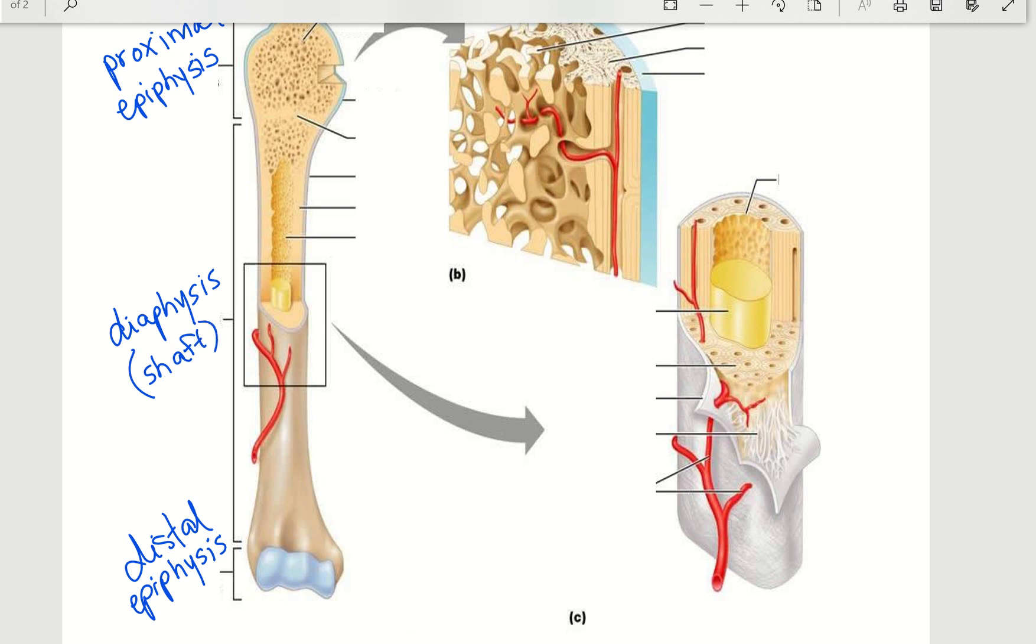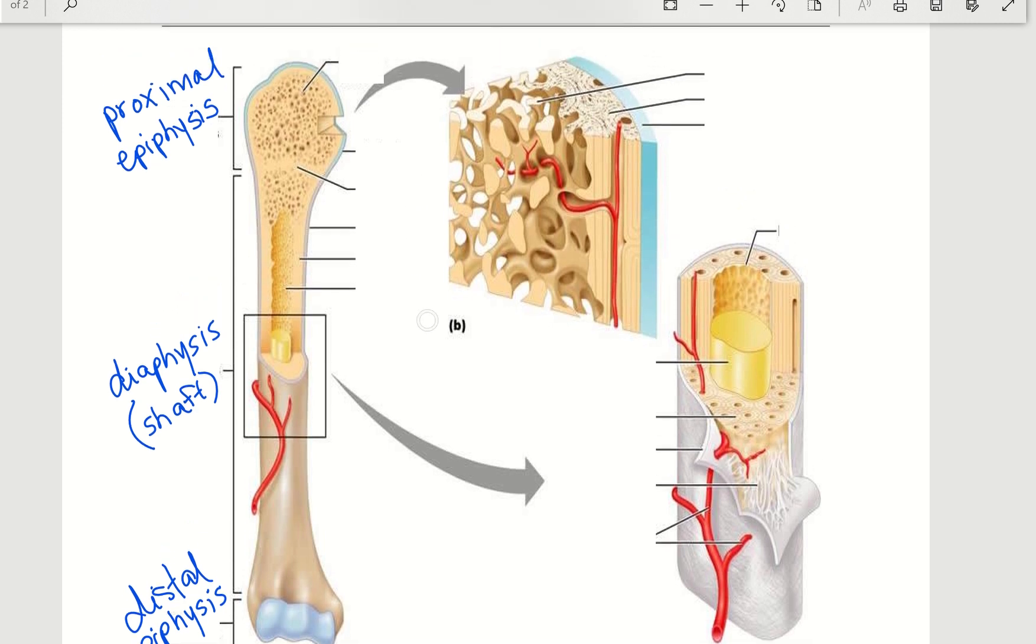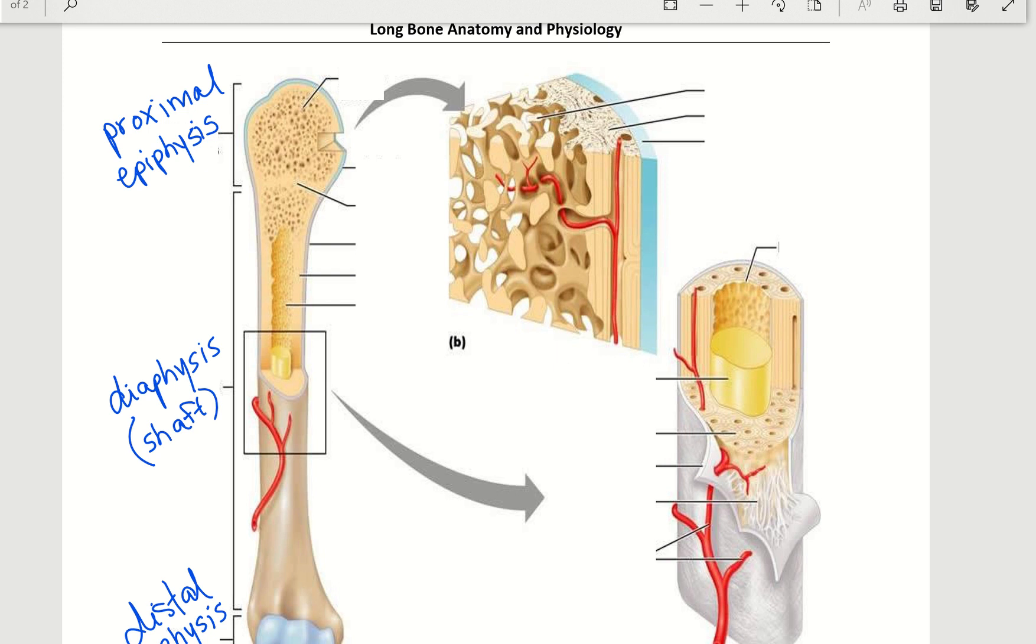Now that we've got the general regional terms taken care of, let's go ahead and talk about the individual components of this bone. If we look at the top, we've got very porous bone here. This is what we refer to as spongy bone. This is important because in adults, this is where we're going to have red bone marrow. So those porous regions are going to help store that marrow.